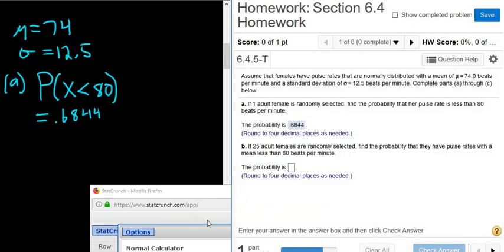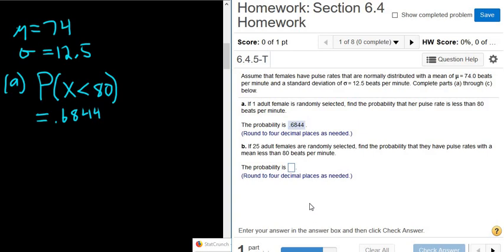Part B: If 25 adult females are randomly selected, find the probability that they have pulse rates with a mean less than 80 beats per minute. This one's a little bit different. So here we're told 25 adult females are selected, so n is equal to 25. We're looking at the mean weight of these 25 women, so x bar is the average weight of the 25 women, so it's the sample mean, right? 25 is the sample size.